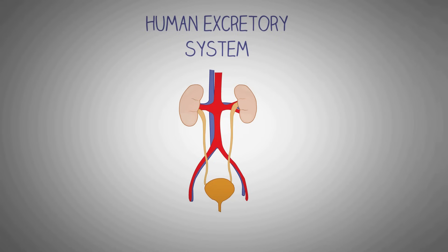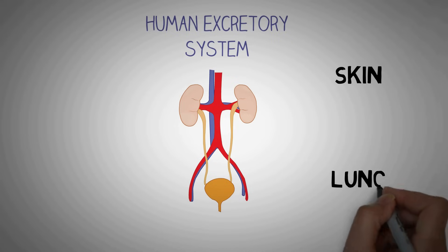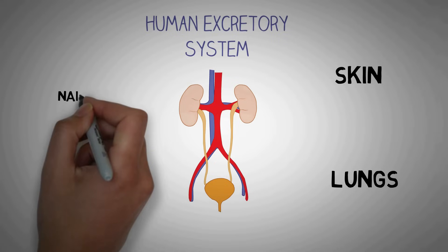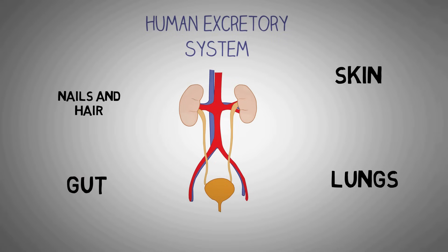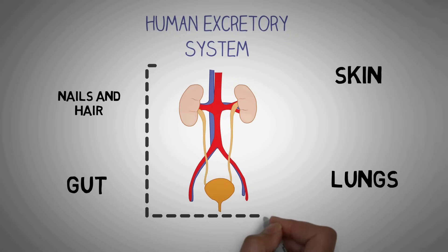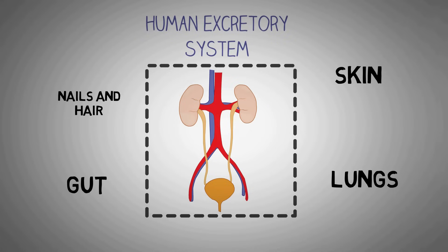In this video we are going to study about the human excretory system. In a narrow sense, the term refers to the urinary system. However, as excretion involves several other organs, it is important to remember that the human excretory system is a wide term that also includes organs like skin, lungs, gut, nails and hair. In this video we will first learn about the urinary system and then we will discuss the other organs involved in the process of excretion.